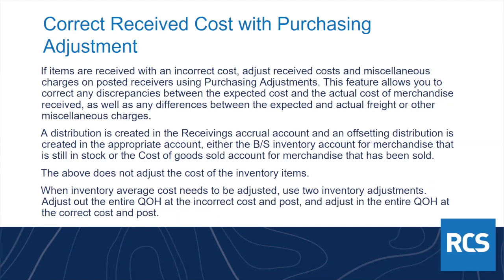To change average cost for the full quantity on hand, you do two inventory adjustments: first, adjust out the entire quantity at the incorrect cost — leaving the accounting cost checkbox checked — and post that adjustment. Then adjust the entire quantity back in at the correct cost and post. Before starting, make sure everything else is posted: sales, open adjustments, receivings, and transfers, so your entire quantity on hand is accurate. After that, your average cost for that item and location will be correct.